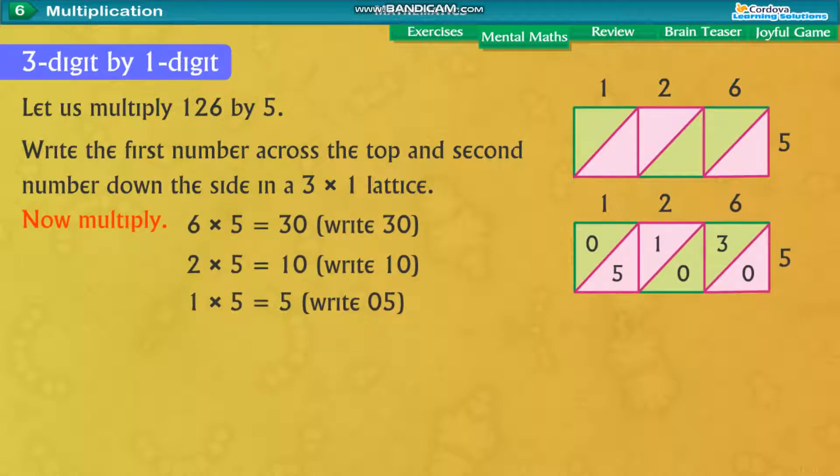Now multiply. 6 into 5 equal to 30. Write 30. 2 into 5 equal to 10. Write 10. 1 into 5 equal to 5. Write 0, 5.